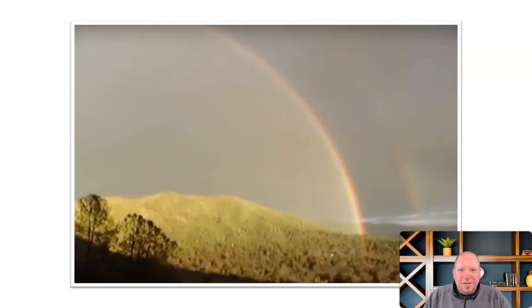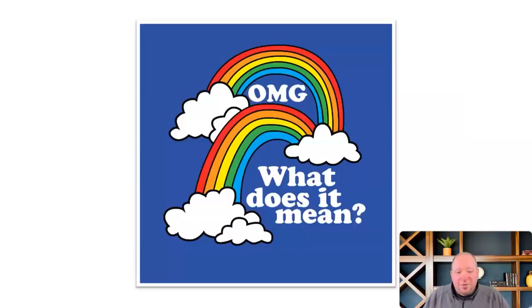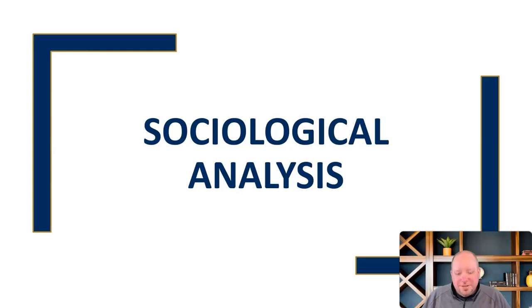He keeps asking, 'What does it mean? What does it mean?' That's this wonderful gentleman here — the double rainbow guy. I remember it because it was such a significant viral video, and it showed how we're all connected yet seeing things differently. How he perceived those rainbows differently struck me, and his question has really stuck with me over the years — especially when I think about sociological analysis, the critical framework we're going to be looking at in this video.